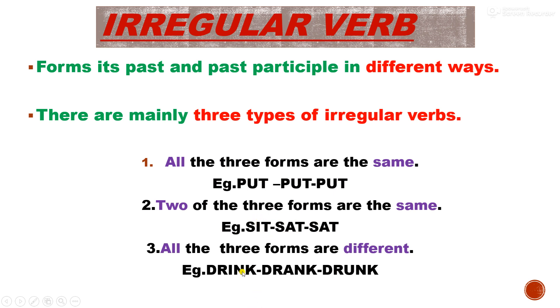The third type of change is where all three forms are different — present, past, and past participle are all different. These are also irregular verbs.